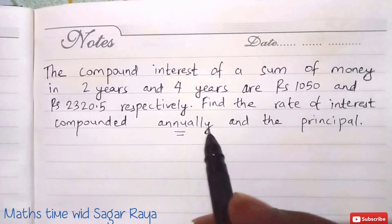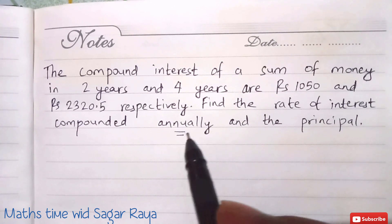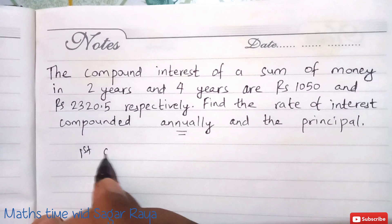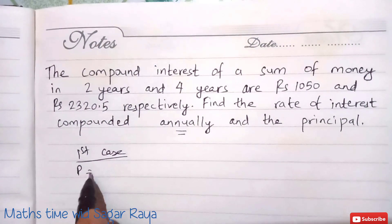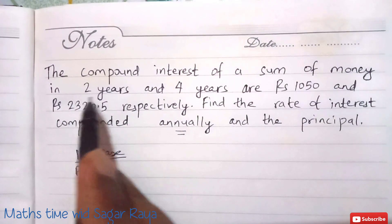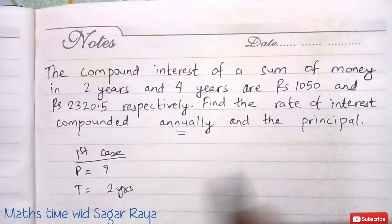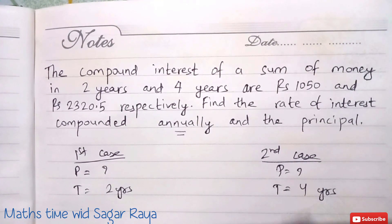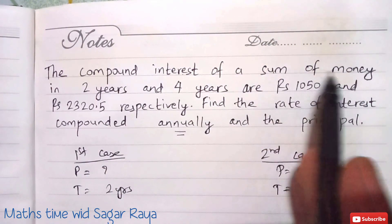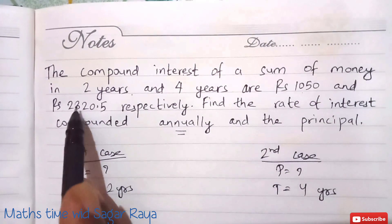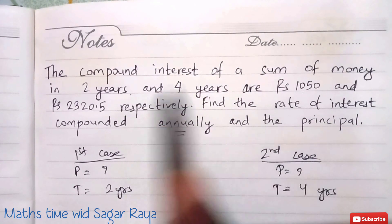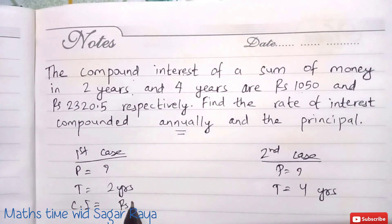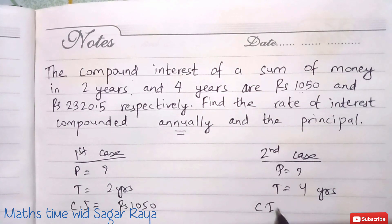Let's set up two cases. In the first case, the principal is unknown and the time is two years. In the second case, the principal is also unknown and the time is four years. The compound interest for two years is rupees 1050, and the compound interest for four years is rupees 2320.5.